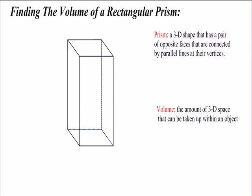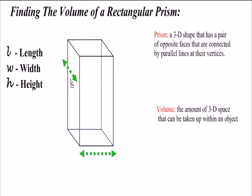Finally, we need to know the dimensions of the rectangular prism. Dimensions include the length, the width, which is the depth, and lastly, the height.